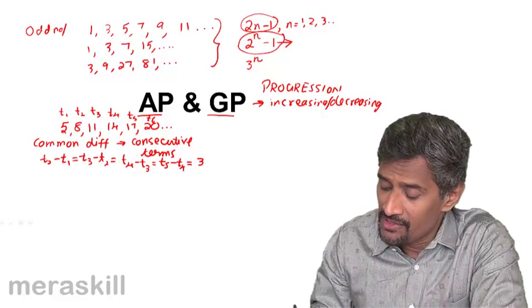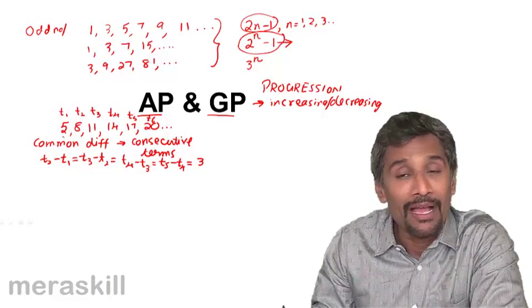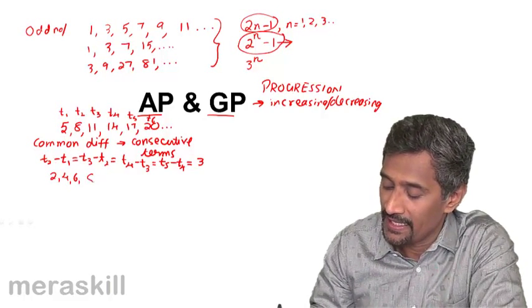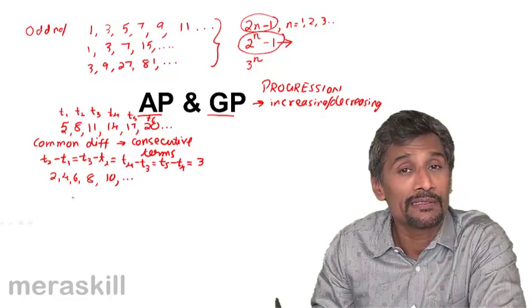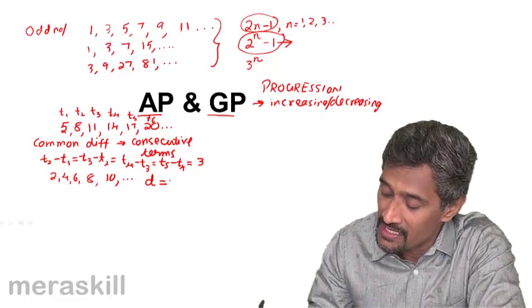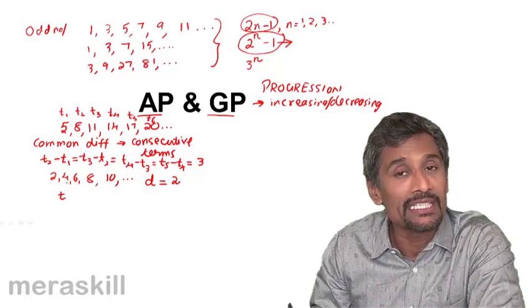So hence, in general, any arithmetic progression is one in which, even if you see something like 2, 4, 6, 8, 10, can you guess what the common difference is? Yes, there is a series of even numbers. So the common difference d, we call it as d, is given by 2, which means that t2 minus t1.